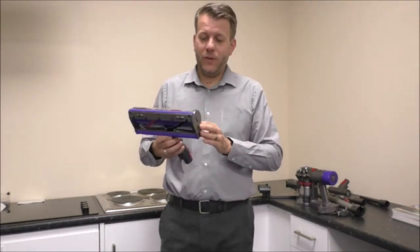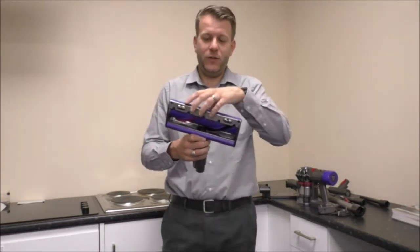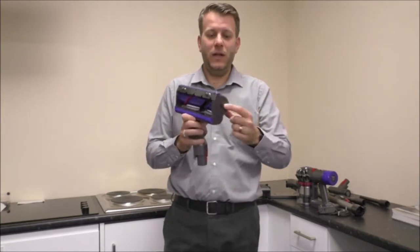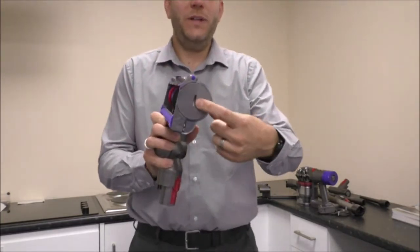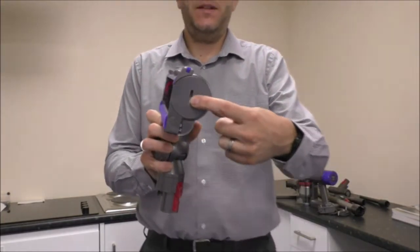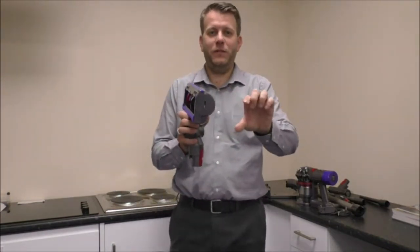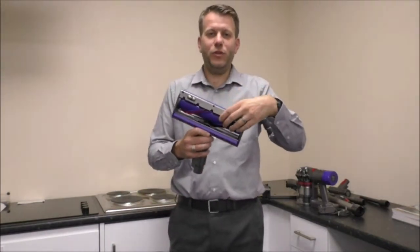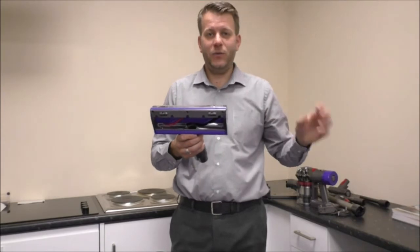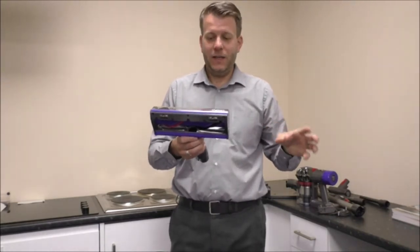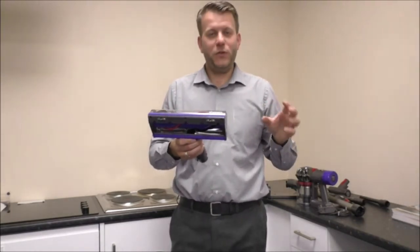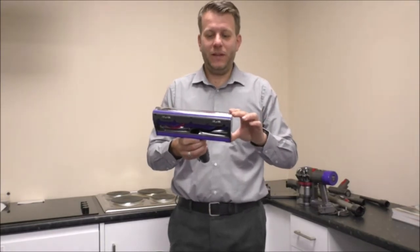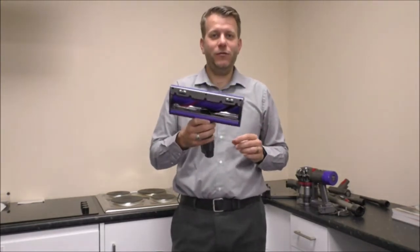What you can also do with this is you can take it apart. So you can take this roller out simply by putting a coin in the side, twist it and then that will just drop off. Take the roller brush out, you can clean it so you can get all the hair off if you've got on there, give it a rinse under water, make sure it's completely dry and then just put it back together. So that is a really good tool.